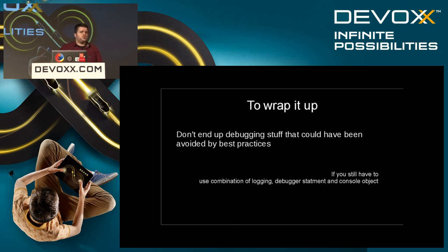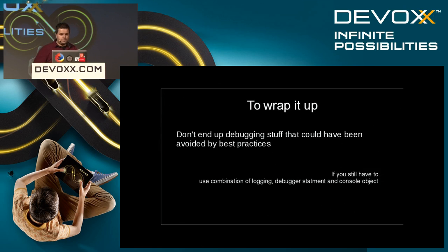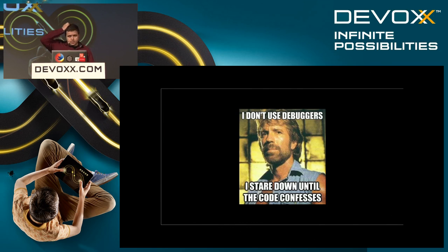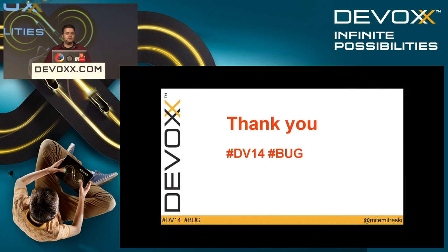To wrap it up — you shouldn't really get into a state where you need all this tooling. Try to catch the problem sooner: have a proper build setup for the JavaScript part, just as you would for a Java application, use best practices, and you probably won't get into a situation where you need to debug. But if you do, a combination of logging, the console object functions, and the debugger statement will give you a lot of leeway to fix your issues. That's it for me — it's a shorter topic, but I find these things really important. We can take a few questions since we have time.